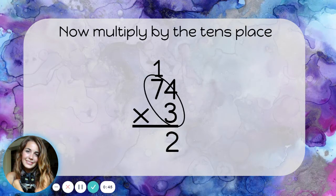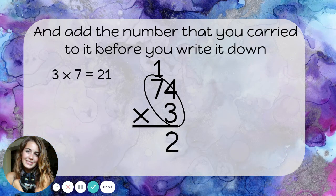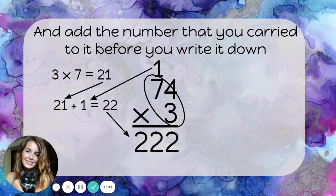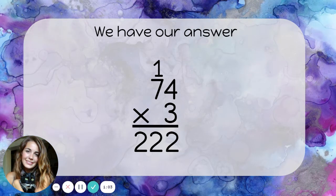Now multiply the three by the tens place. Three times seven is twenty-one. But before you write that down, remember to add the number that you carried to it. Twenty-one plus the one that we carry is twenty-two. We have our answer: seventy-four times three is two hundred twenty-two.